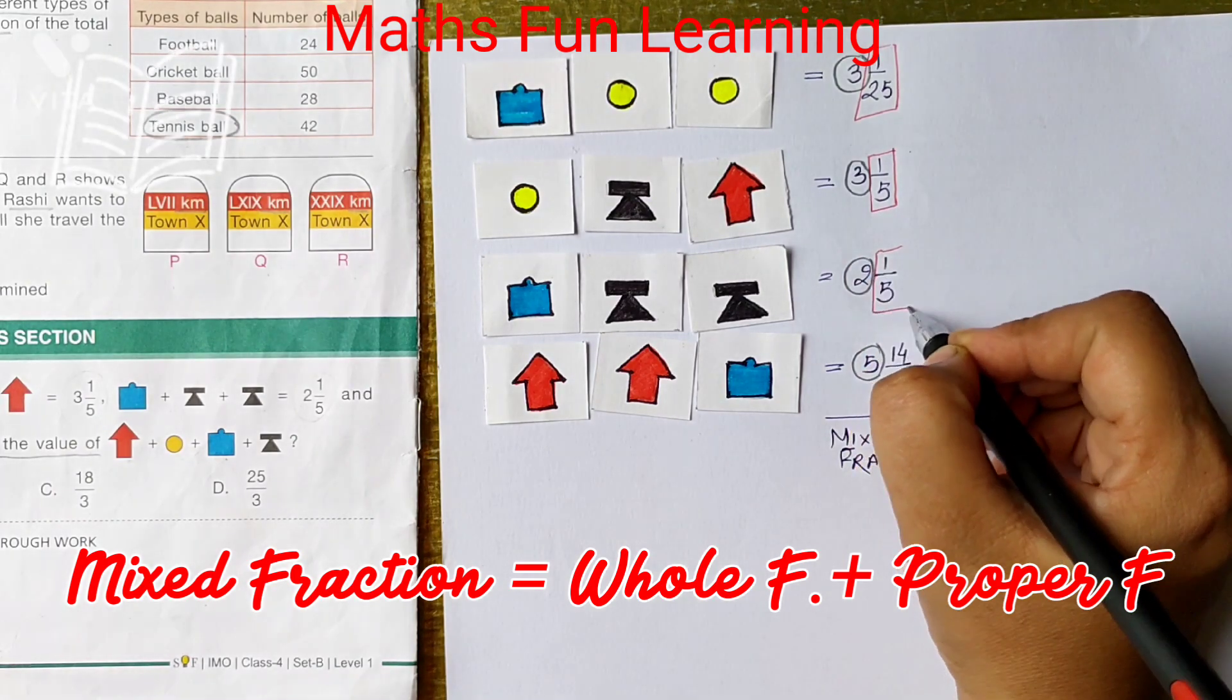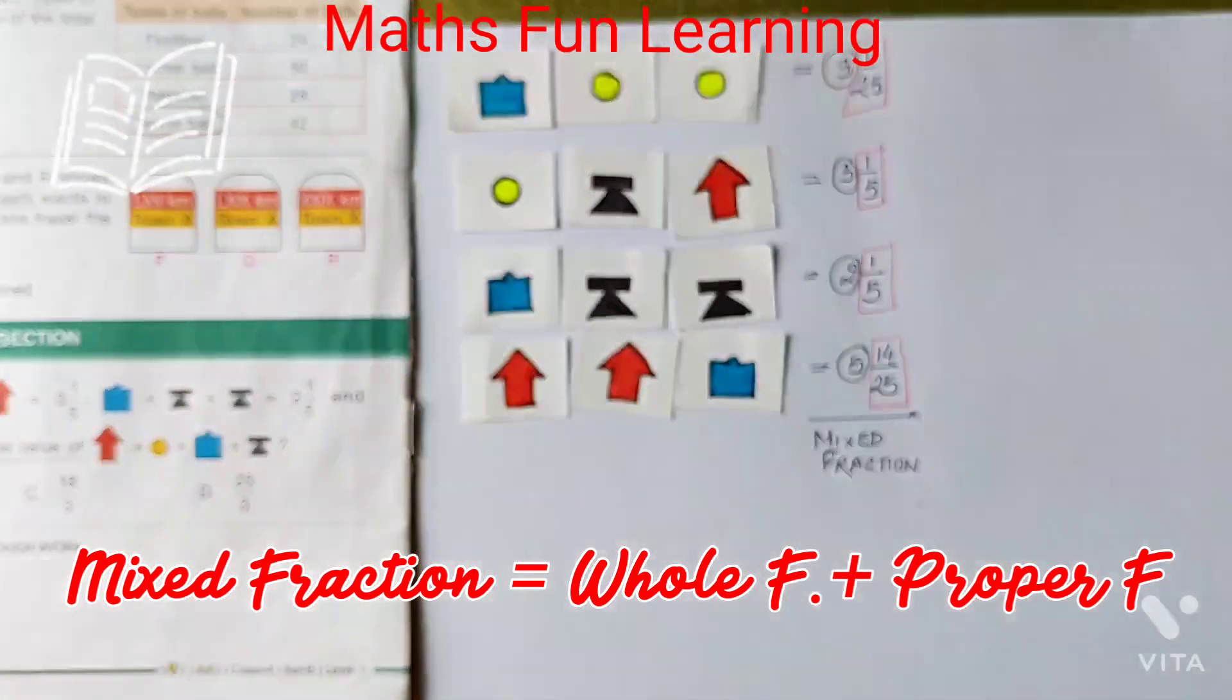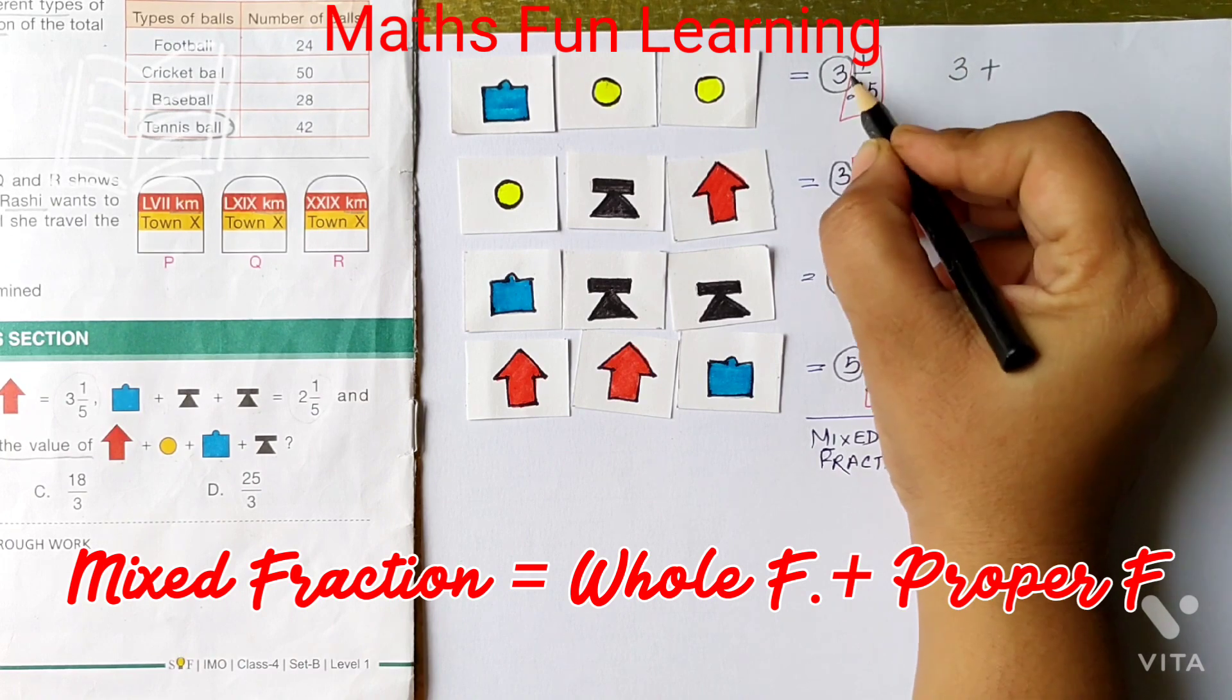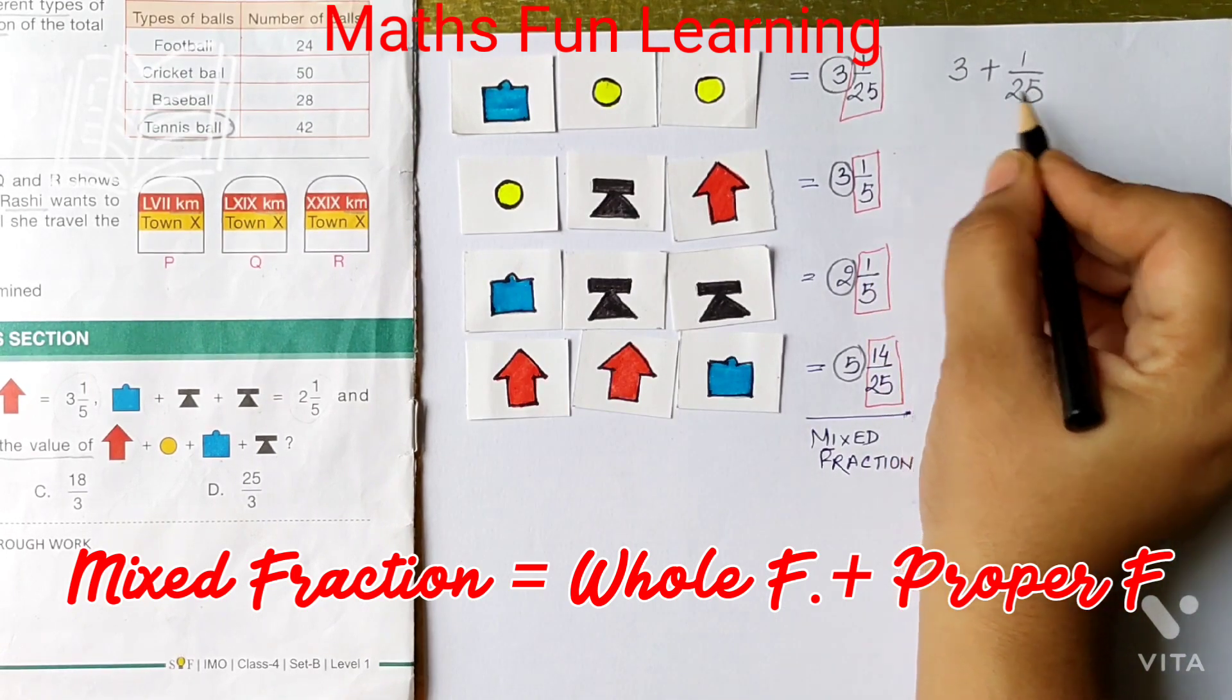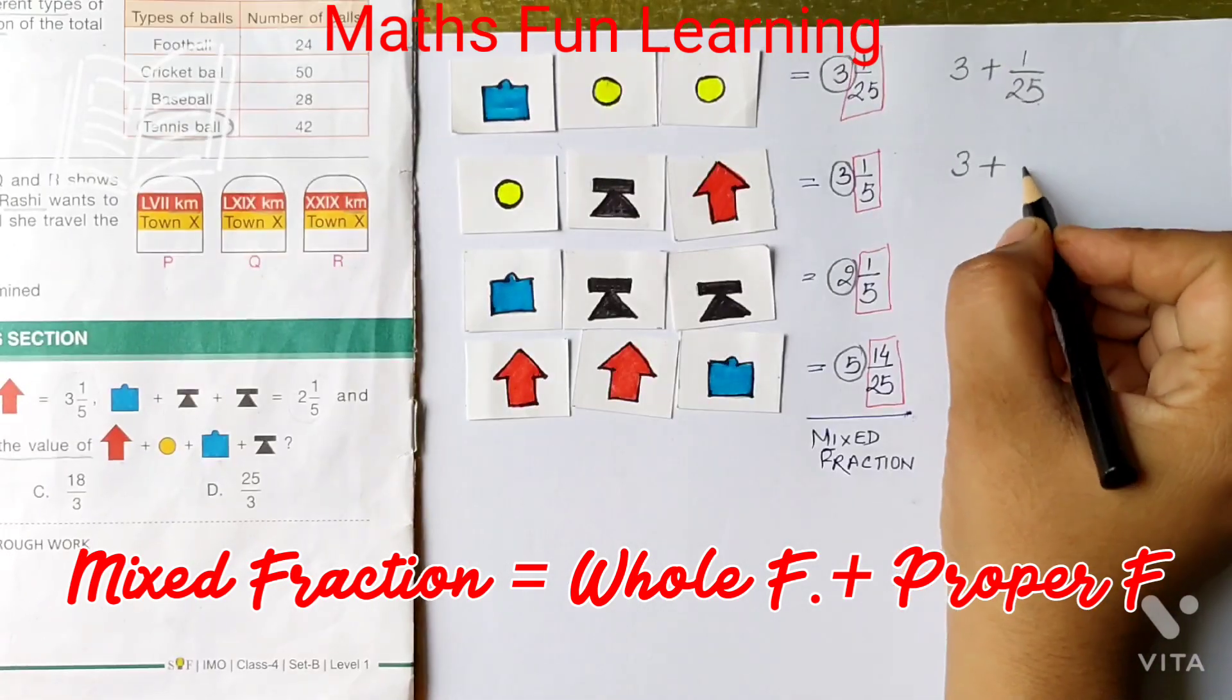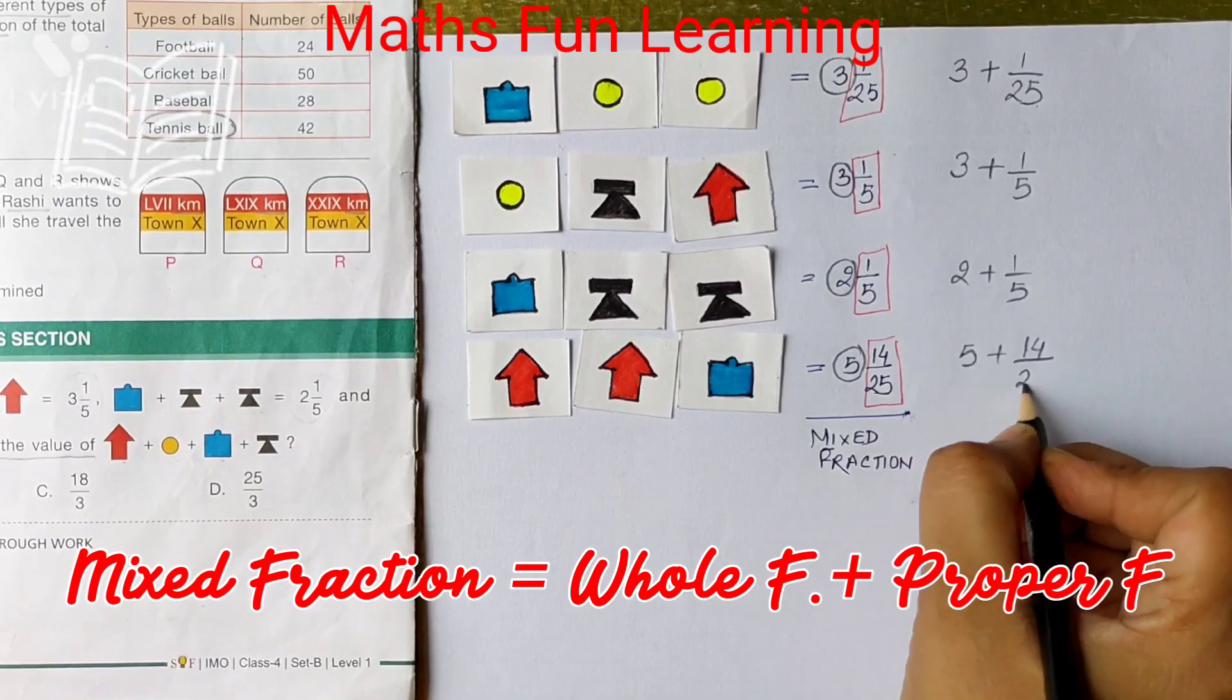So what is the relation between these? So what we can do now to solve easily? We can separate this whole plus proper. So this is a whole number, this is proper fraction. Whole fraction and proper fraction. Here also, whole fraction and proper fraction. Whole fraction and proper fraction. Whole fraction plus proper fraction.